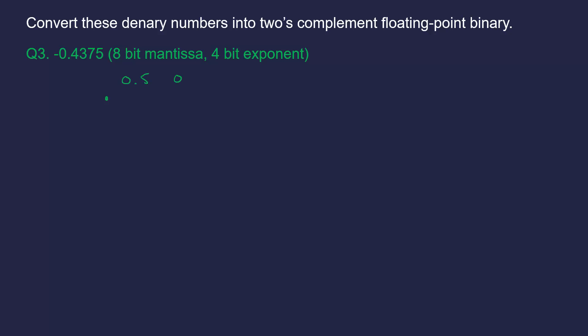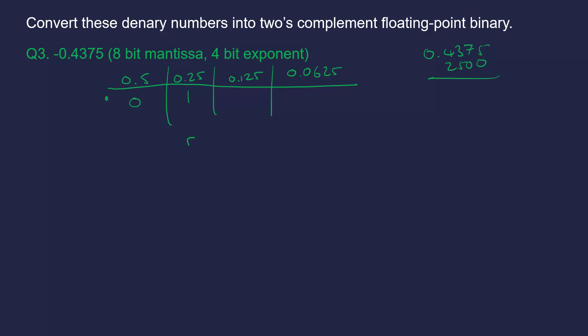Let's ignore the whole number side for now and just have our binary point. We've got half, 0.25, 0.125, and 0.0625. Let's do a quick table: 0.5 goes into 0.4375 zero times, but 0.25 goes in once - remainder 0.1875. 0.125 goes in once - remainder 0.0625. And 0.0625 goes in once, remainder zero. So we don't need any more columns. These combinations are probably about the limit for what they'll usually give you.